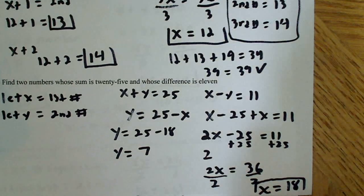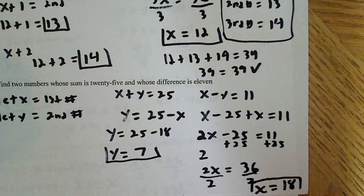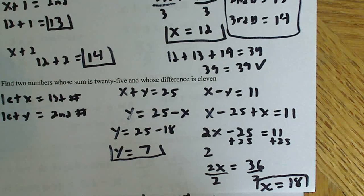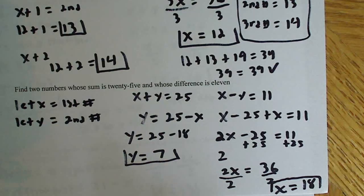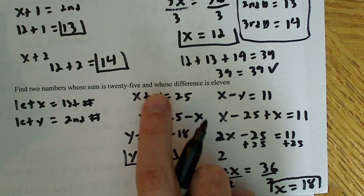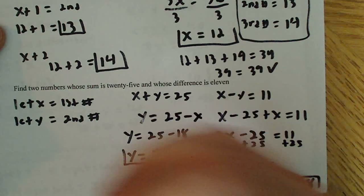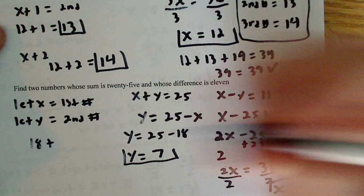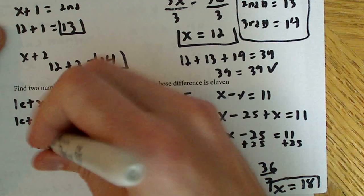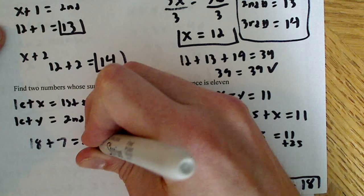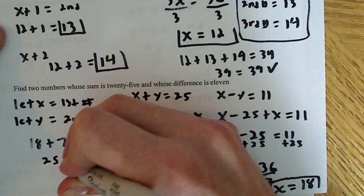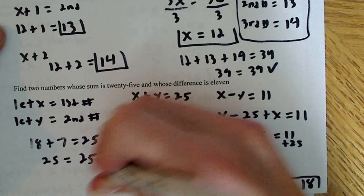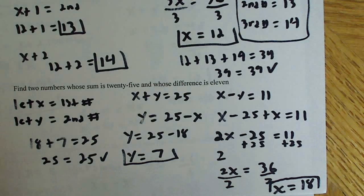Now, in order to check this, to make sure that we have the right answers here, all we have to do is plug it into the original equation over here and see if it equals 25. So 18 plus 7 is equal to 25, and 25 is equal to 25. So it checks out.